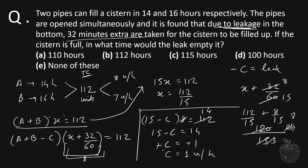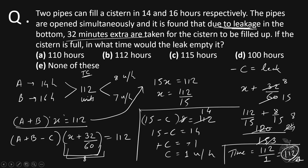C can empty 1 unit per hour. To find the time for the leak to empty the full cistern, we divide the total capacity of 112 units by the leak rate of 1 unit per hour. The answer is 112 hours. So option B is the correct one.